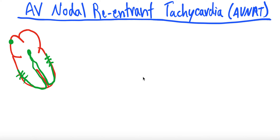Today we'll be talking about AV nodal reentrant tachycardia, or AVNRT. This is a type of supraventricular tachycardia, and we did do a video just on general supraventricular tachycardias — I'll link it in the top right corner. Please feel free to check that out if you have questions about the general category. It would be valuable to view that one first and then come check out this one, so you have the foundation before we dive into more detail on this subtype of SVT.